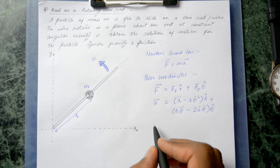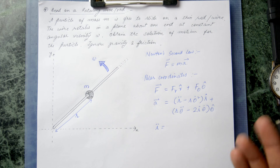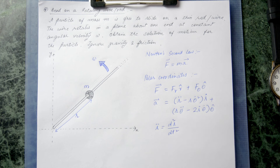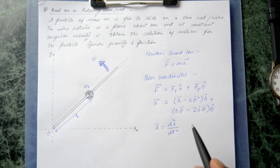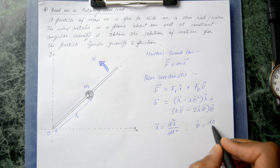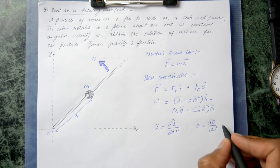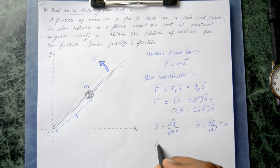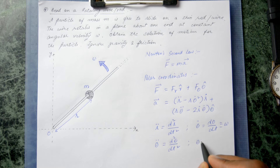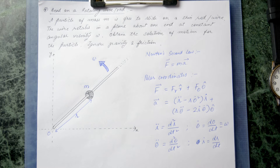R double dot is the second order time derivative of the radial displacement R — the distance of the point mass from the origin O. Theta dot is the angular displacement with respect to time, which is nothing but omega, the angular velocity. Theta double dot is the second order time derivative of the angular displacement, and R dot is the first order time derivative of R, the radial velocity.